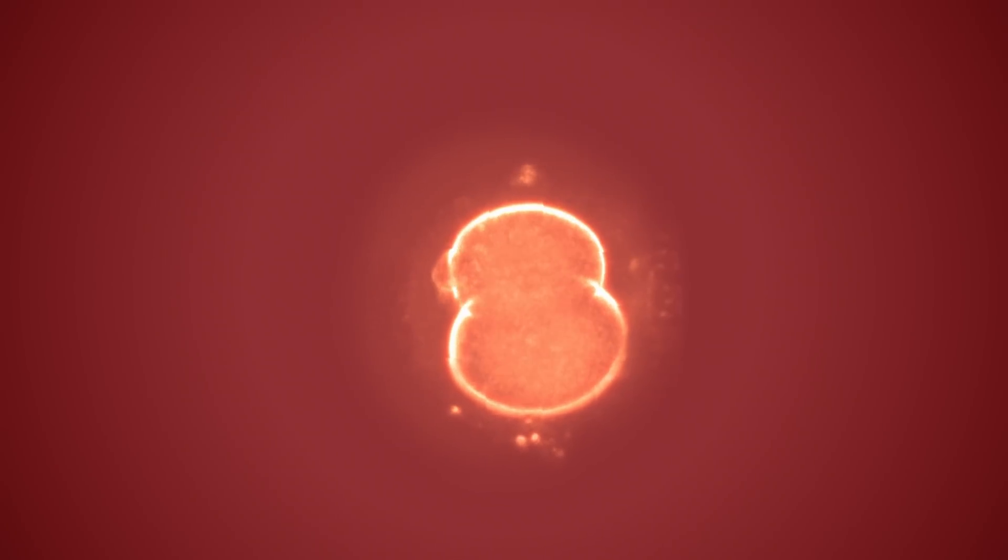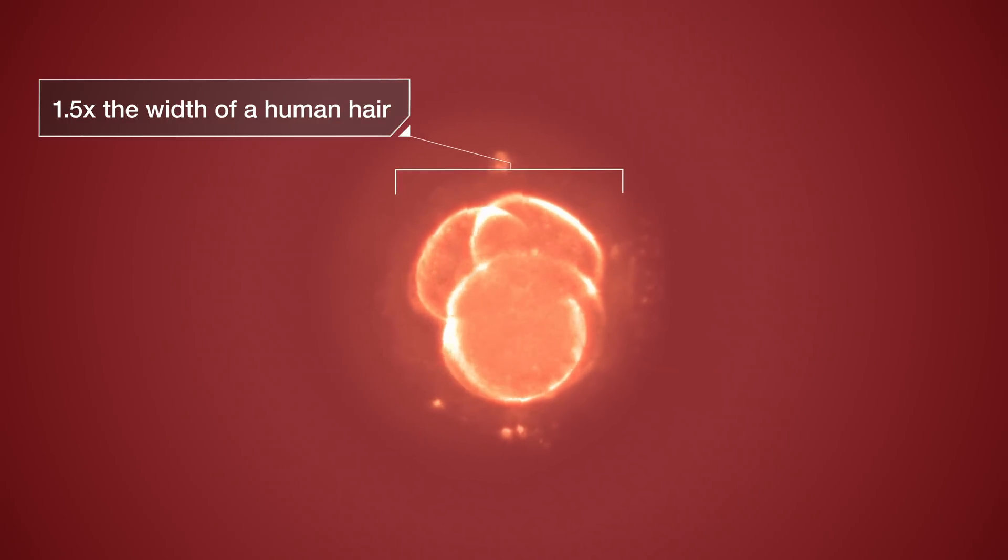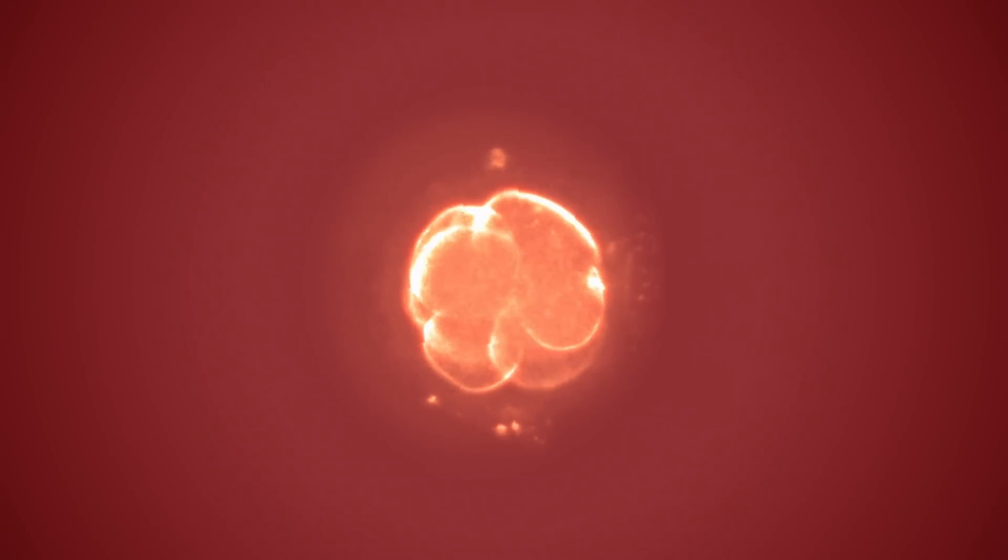What you're seeing here is a human embryo about one day after fertilization. Every one of us started out this way, as a single cell, dividing into two cells, then three, four and more.